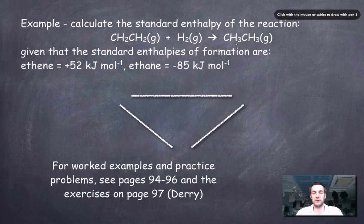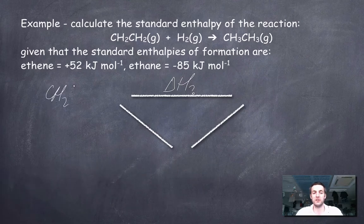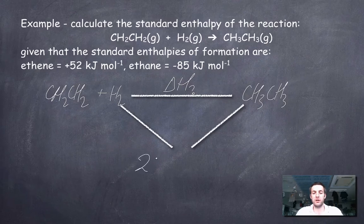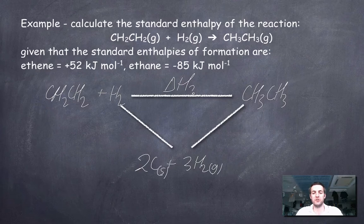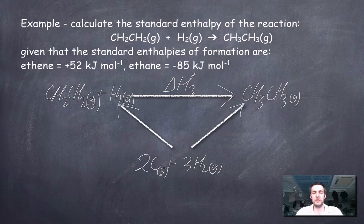Here's an equation for a reaction whose enthalpy change we don't know — I'm putting it on the top, but I could put it on any side of my triangle as long as I get the arrows pointing the right way. Here is ethene reacting with hydrogen to form ethane. What we can certainly do is imagine that we made these substances from their elements: two carbons and three hydrogens making the reactants, and these same elements going together to make the product. This enthalpy change will be determined by using the standard enthalpies of formation.